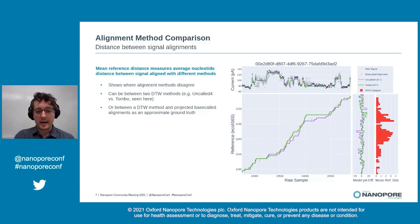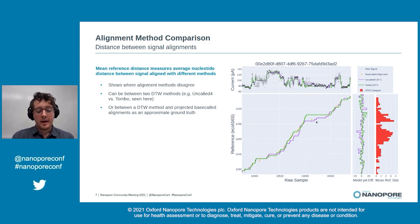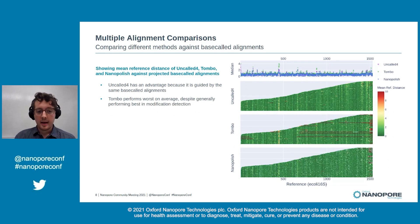Here we're showing a dot plot of an individual read aligned using two different methods — Uncalled4 and Tombo in this example. The side panel shows a measurement of distance between the two alignments: the average number of reference bases that different stretches of signal are away from each other, where spikes indicate where the alignment methods disagree. We're also looking at Uncalled, Tombo, and Nanopolish alignments compared against projected base-called alignments over the whole E. coli 16S transcript.